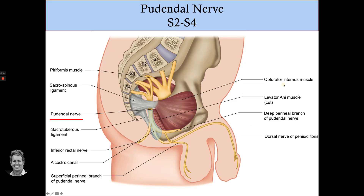The pudendal nerve comes from S2 to S4. It supplies the perineum for sensation, and from a motor perspective controls the contraction of the external anal sphincter and also the external urethral sphincter. It is very important.